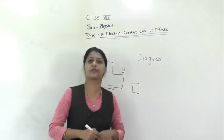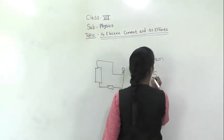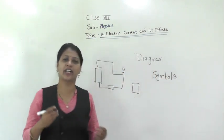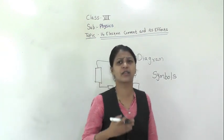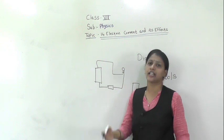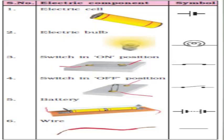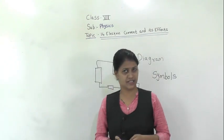Yes, there is an easier way to draw these components of the electric circuit. To draw the electric circuit, we use symbols. There are different symbols to draw the electric circuit. In your book, there are some symbols given in Table 14.1. Using those symbols, we can draw the circuit, and it will make it very easy to draw a circuit diagram.